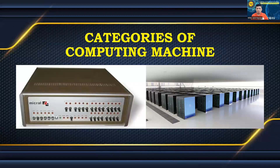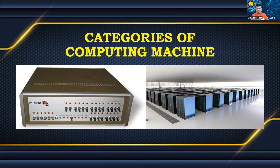Computing machines as referred to at present are known as computers. A computer is an electronic computing machine that can process, retrieve, and store data. It processes the input in accordance with the set of instructions the user provides and produces the intended result. There are many different kinds of computers. Today's computers are utilized for different types of purposes such as writing documents, editing photos and videos, internet browsing and gaming, and creating applications.